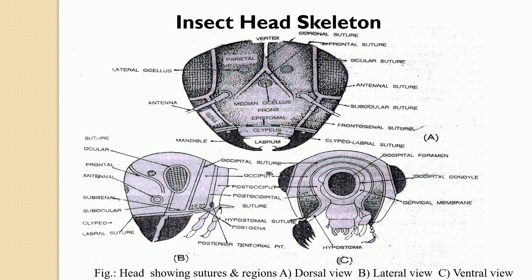The insect head generally exhibits different kinds of sclerites as follows: firstly the labrum, located at the anterior-most part; then the clipeus; third is the frons; then the epicranium; then the occiput; then the post-occiput; then the gena; the ocular sclerite; and the antennal sclerite. These are the different kinds of sclerites which can be recognized on the head of a generalized insect.